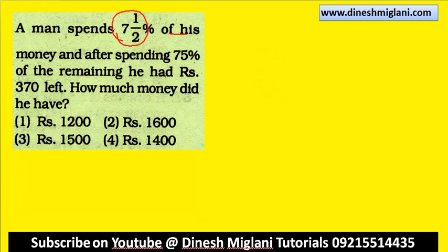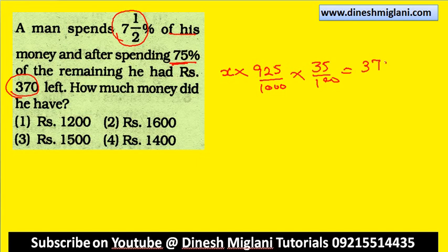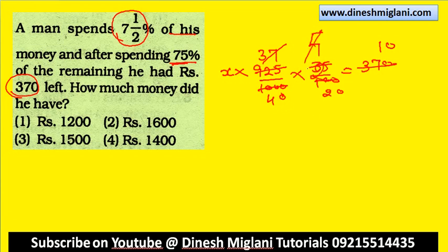A man spends 7.5% of his money. After spending 75% of the remaining, he had rupees 370 left. Suppose he has x with him. 7.5% spent means 92.5 is left, that is 925 by 1000 into x. After spending 75% of the remaining, he is left with 25%, which is 35 by 100. This equals 370. Solving: x = 1600 rupees. Second one is our answer — he had rupees 1600.